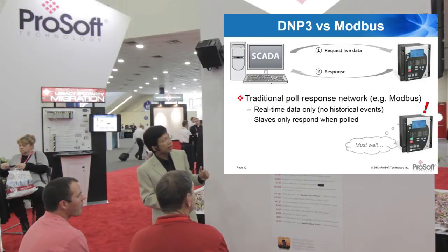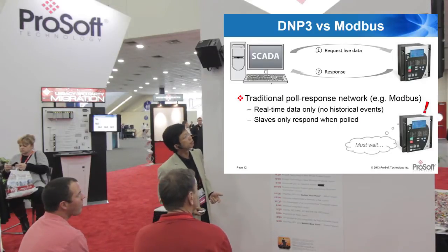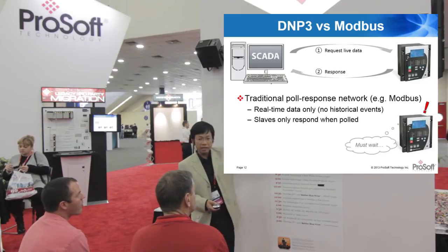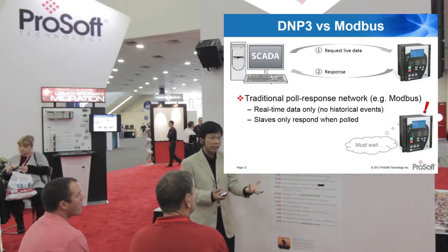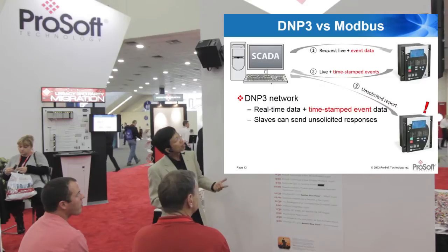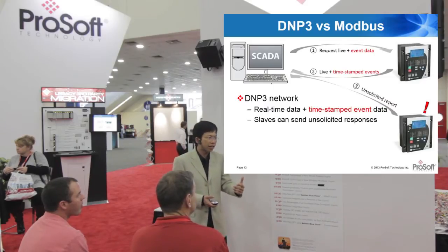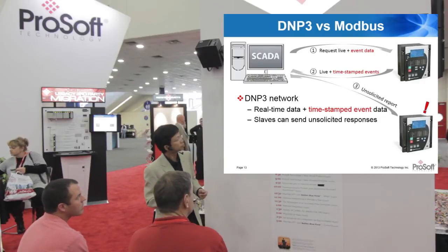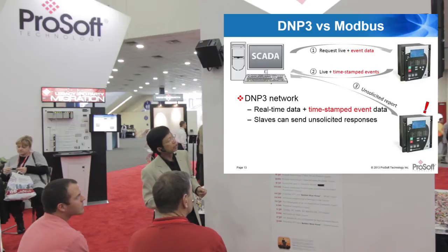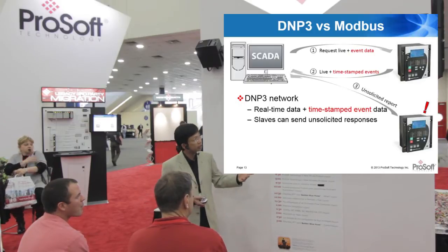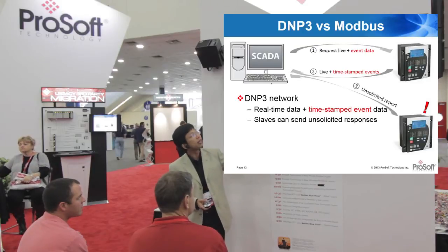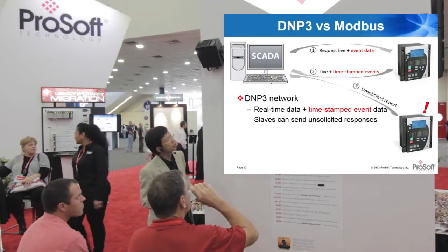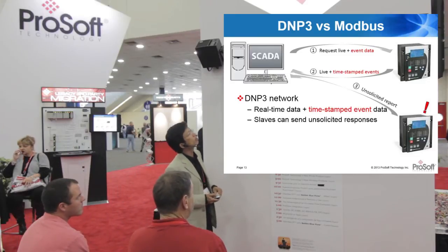DNP3, on the other hand, tries to address these weaknesses by providing native support for event data. Your IEDs out in the field are actually able to keep a database of events as they happen and report them with timestamps — so you know exactly when a certain overload relay tripped or when a device went over voltage. They also have built-in support for unsolicited reporting, so if anything happens based on your predefined parameters, the slaves will actually report to the master — they'll talk out of turn. Those are the key advantages of DNP3 over Modbus.